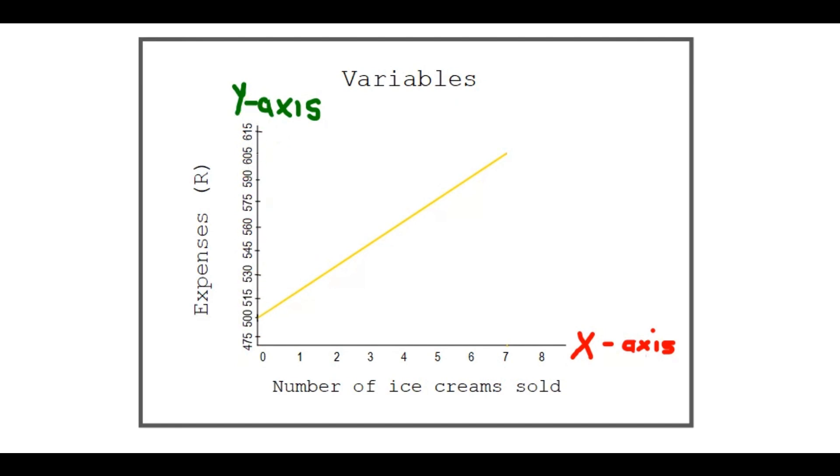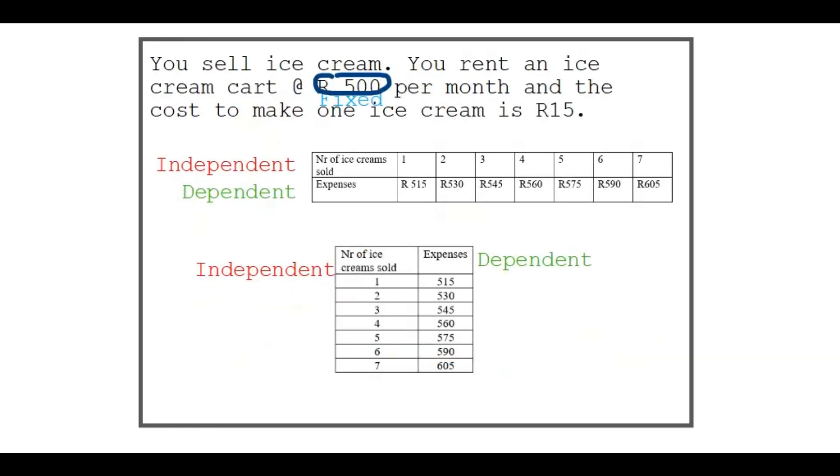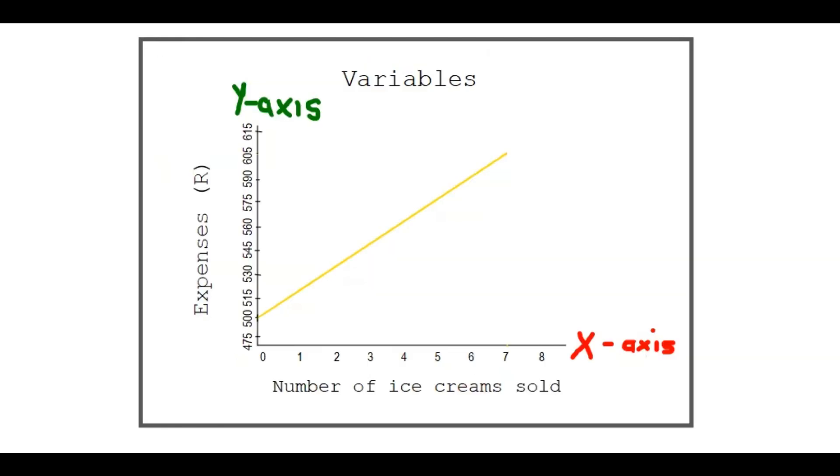Now, drawing this on the graph, we have a y-axis with our scale and the expenses to make ice creams, and on the x-axis, we have a number of ice creams sold. This is just from the previous table. We used that data, and we drew a graph.